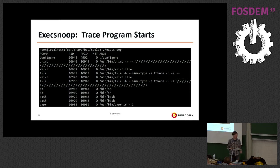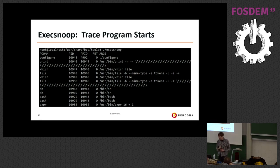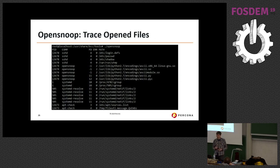If you've ever wondered, for a program written in a complex language, what tools and other programs it executes, there is execsnoop — you can look at either the whole system or a specific program to see what different programs are being started. This helps you understand what a program does or figure out what's failing. There is also opensnoop for open files, which is very helpful when programs have poor error messages — it shows what files a program is accessing.